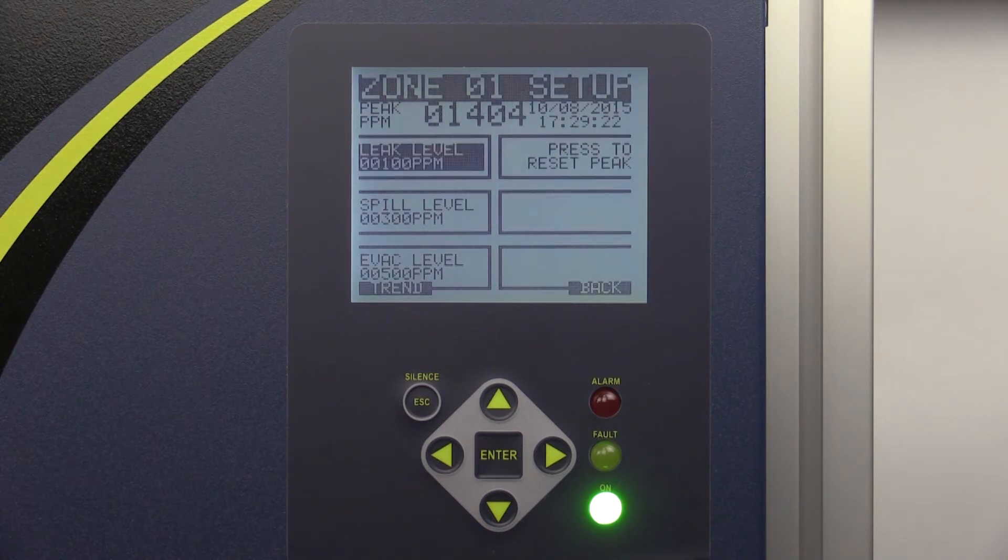If a single splitter was used for a specific zone, the leak, spill, and evacuation levels should be halved from their desired values in order to account for dilution of the contaminated air caused by the mixture of samples from two separate sample points. If a triple splitter was used, the leak, spill, and evacuation levels should be reduced to one-third of their desired values for the same reason.